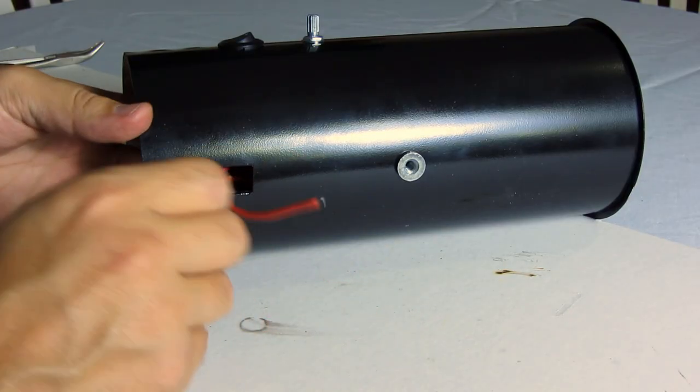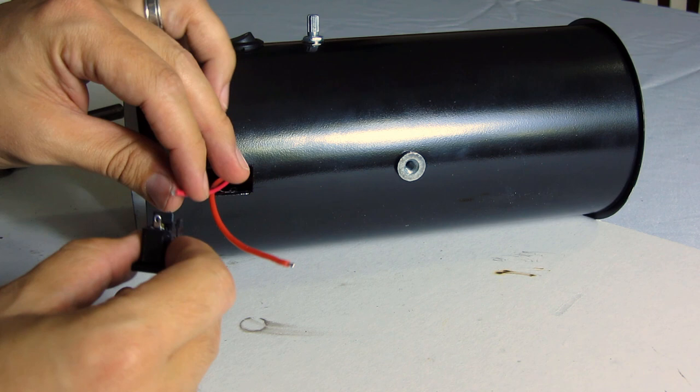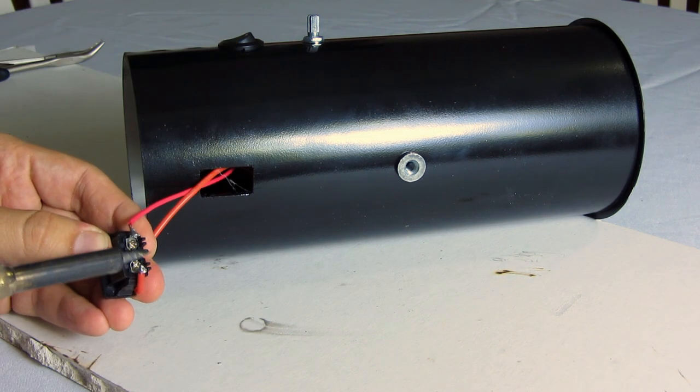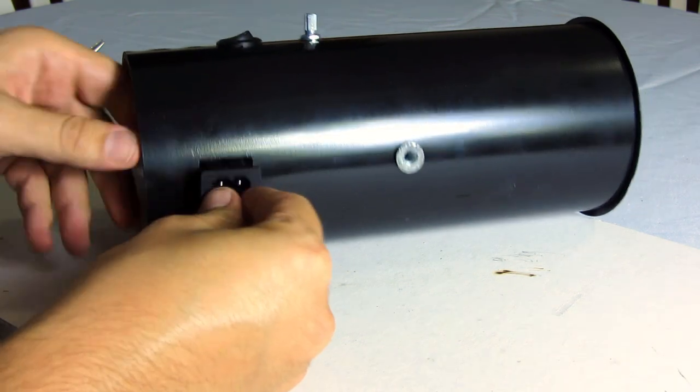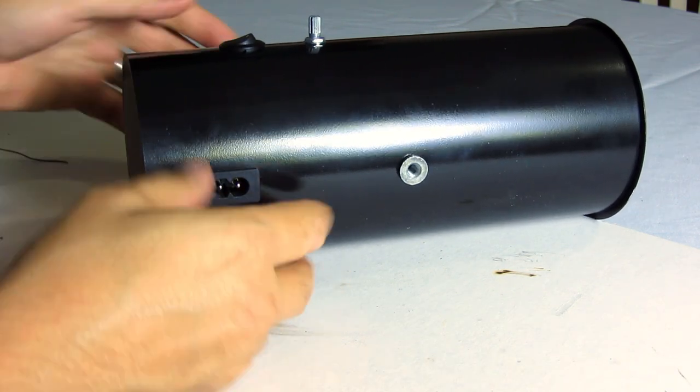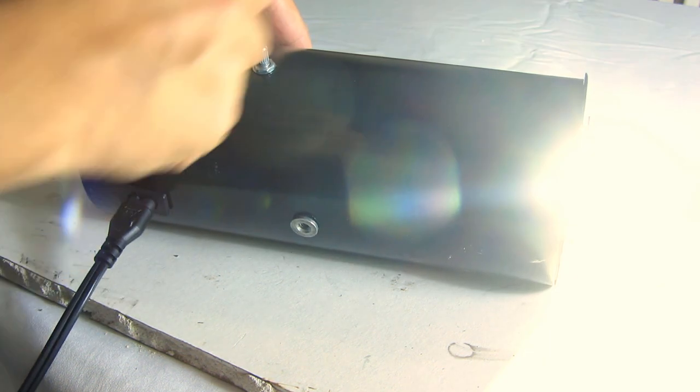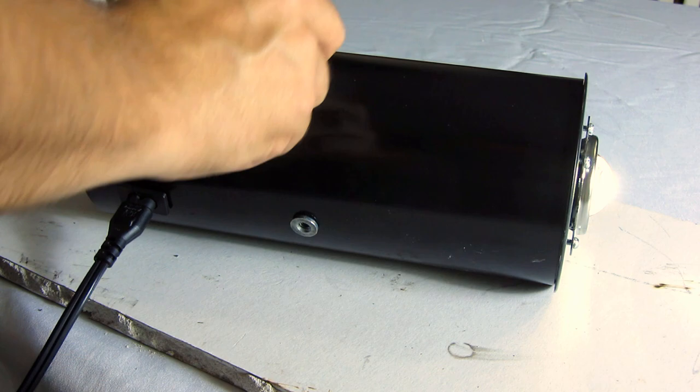Moving on to the power input, pull out the last wire from the LED driver and the one from the power switch. Both of these will go onto the power socket. Then the socket can be pushed into place. Now I'll test it out quickly. Plug it in, turn it on, and it works. Testing the dimming knob, that works too. Awesome.